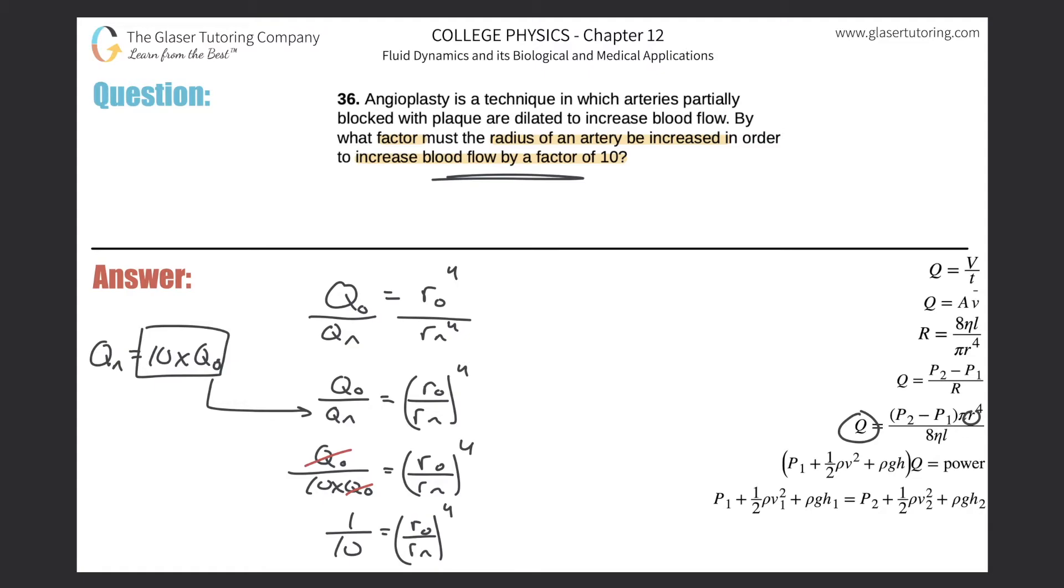Now we can solve this and think about whether the answer makes sense. Remember, they're asking us for what factor must the radius of an artery be increased. So essentially the way this is being framed, they want us to find rn compared to ro. We know that because it's a direct relationship in the formula—if r goes up, q goes up, because r is in the numerator.